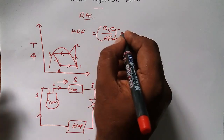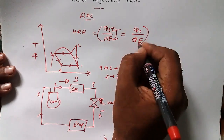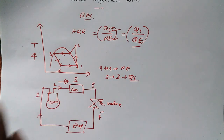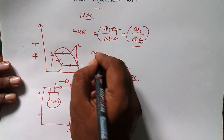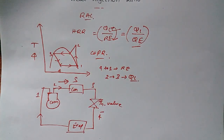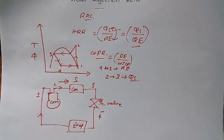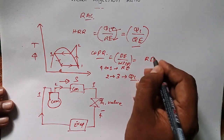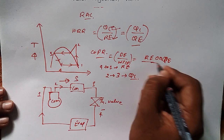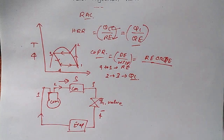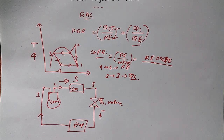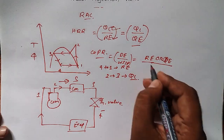So the heat rejection ratio equals the heat rejected at the condenser divided by the heat absorbed in the evaporator, or refrigerant effect — both are the same. We can write this as Qc / Qe. We can also relate this to the COP of a refrigerator: COP of refrigerator = desired effect / work input, where the desired effect is Qe, the heat absorbed in the evaporator.